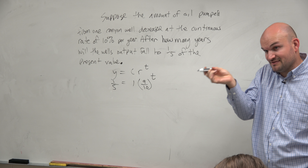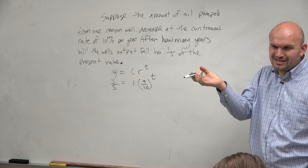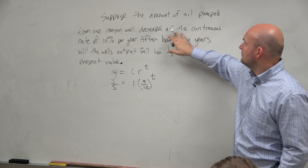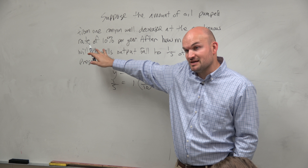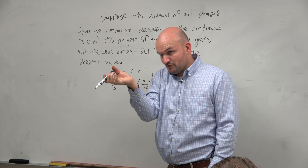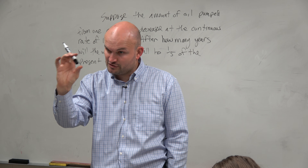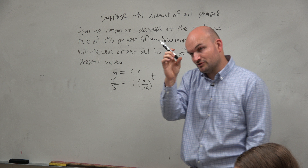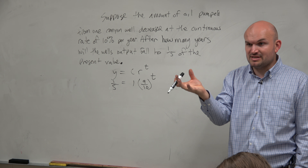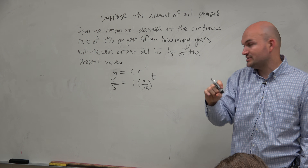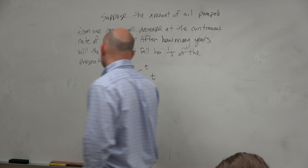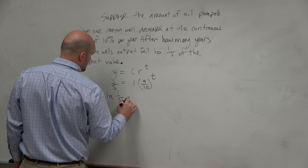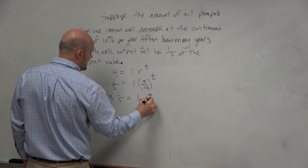Suppose the amount of oil pumped onto the canning well decreases at a continuous rate of 10% per year. After how many years will the well be performing at 1/5 of the present value? So we have our initial and our final amounts — I'll call that y — equals our initial amount times our rate r to the t.